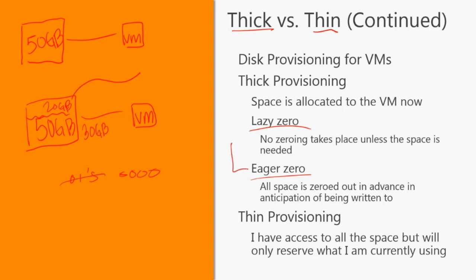Eager zeroed is a little different. Eager zeroed says, as soon as I provision this for the virtual machine, I'm going to take those former zeros and ones that are there — keeping old data that I don't care about anymore — get rid of these and zero everything out so that it's ready to go right now and easy to write to.